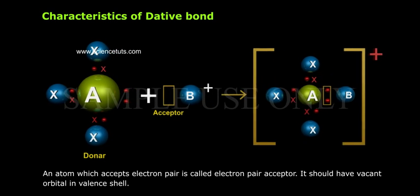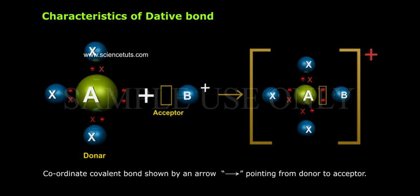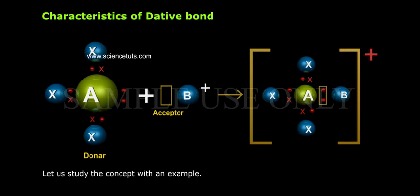An atom which accepts an electron pair is called the electron pair acceptor. It should have a vacant orbital in its valence shell. The coordinate covalent bond is shown by an arrow pointing from donor to acceptor. Let us study the concept with an example.